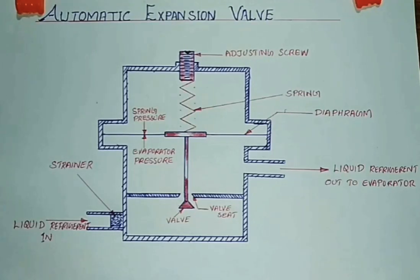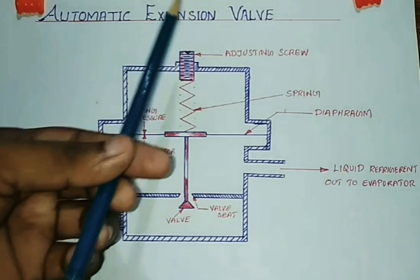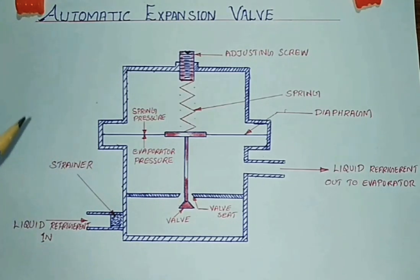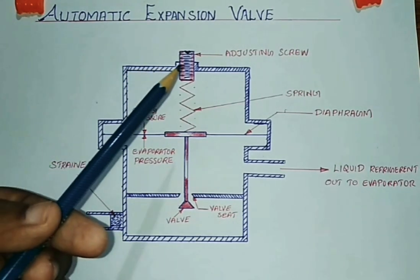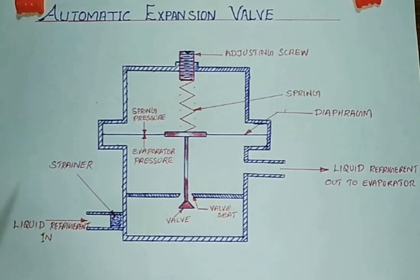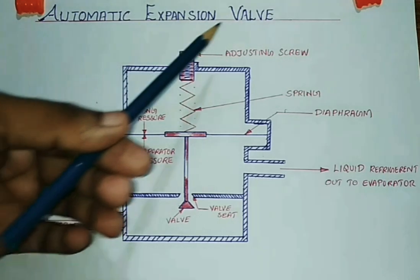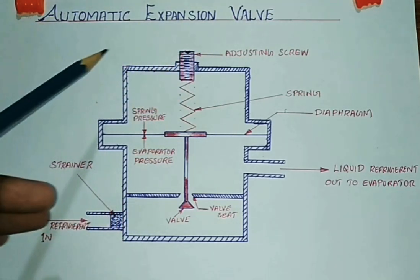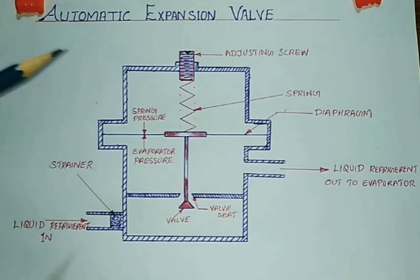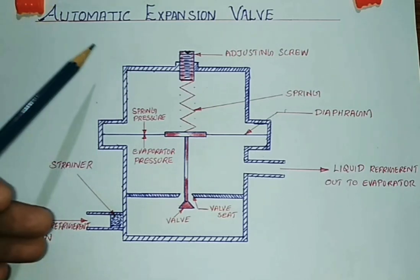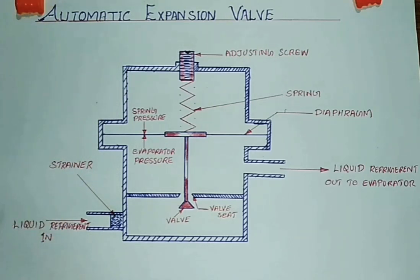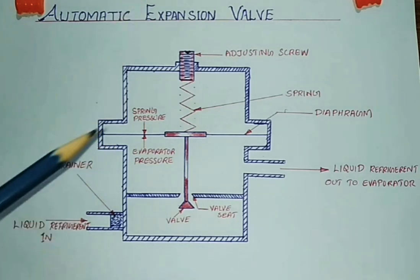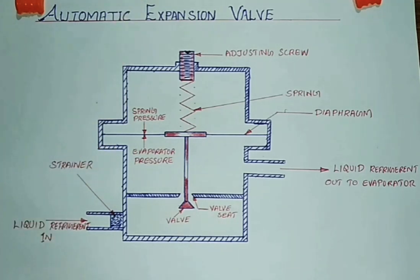Hi students, welcome to MEXLOK. We are going to discuss the automatic expansion valve, also called the constant pressure expansion valve. We are going to use it in home freezers, water coolers, and hermetic sealed compressor commercial operation machines.